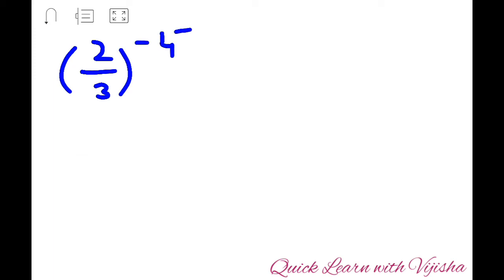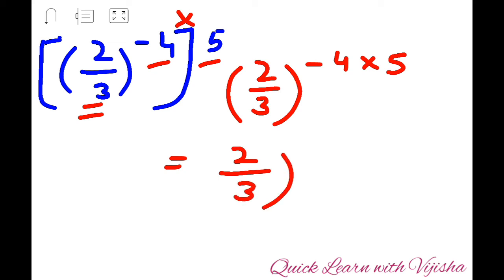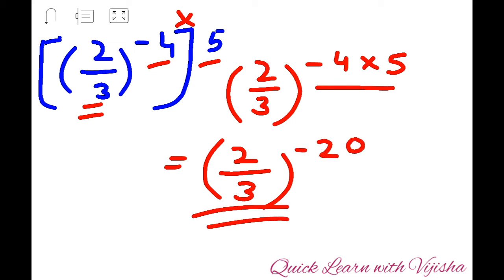Let's see one more example to make the concept clear. The question is: (2/3) raised to (−4), raised to 5. There is only one base — 2/3 — and two indices: −4 and 5. Since there is a bracket, it becomes multiplication: (−4) into 5. Your base is 2/3, and (−4) × 5 gives −20. So the answer is (2/3) raised to (−20).